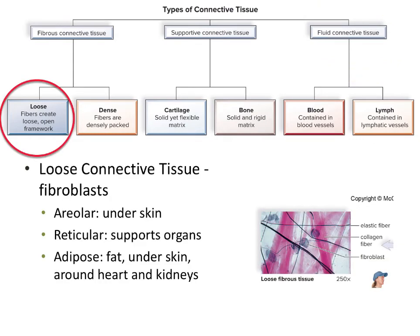Let's start with loose connective tissue. There are three types: areolar, which you would find under the skin; reticular, which supports organs; and adipose tissue, which is fat tissue found under your skin as well as around the heart and kidneys. You can see in this picture that there are a lot of different types of fibers — elastic fibers, collagen fibers, and reticular fibers. You can see it's really quite open, meaning there's a lot of space in between the cells.